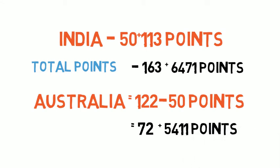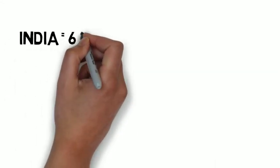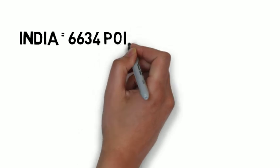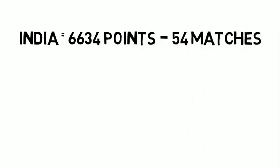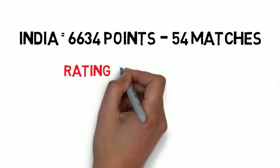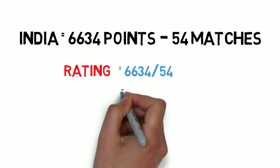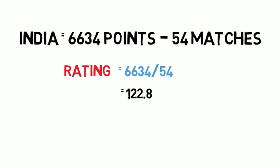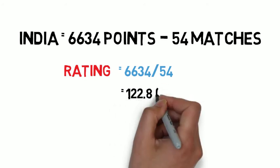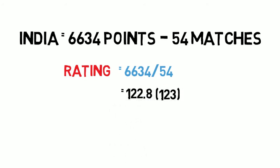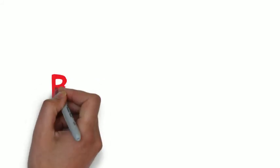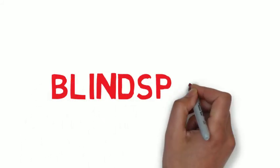Talking about India only: after this scenario, India will have a total of 6,634 points from 54 matches. To get the updated rating, we divide 6,634 by 54, which gives approximately 122.8 — shown as 123 when rounded. Hope you understood the explanation. Until the next video, keep hitting your lines.